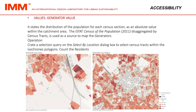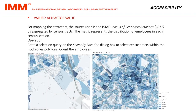Create a selection query on the select by location dialog box to select census tracts within the isochronome's polygons. Count the residents. Attractor value: for the mapping of the attractors, the source used is the ISTAT census of economic activities 2011, disaggregated by census tracts. The metric represents the distribution of employees in each census section. Create a selection query on the select by location dialog box to select census tracts within the isochronome's polygons. Count employees.